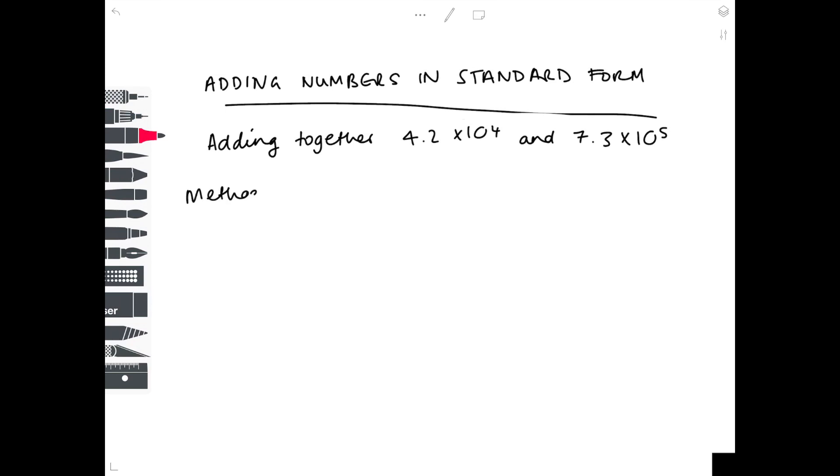There are two methods to do this. Method one is making the powers the same. At the moment the powers are different - this one's times 10 to the 4, this one is times 10 to the 5. It doesn't matter which one you choose as long as it's the same for each. I'm going to keep 4.2 times 10 to the 4 the same.